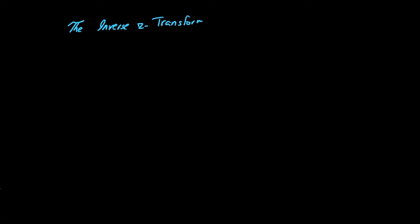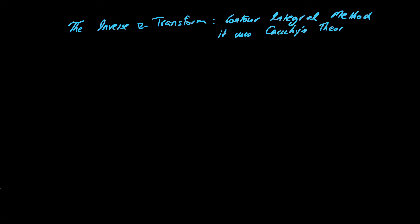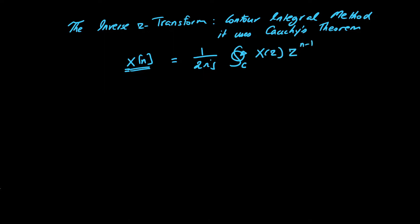We are interested in the inverse Z transform using a direct or general method. Formally speaking, this is a contour integral that uses Cauchy's theorem for complex variable integration. The inverse Z transform — finding x(n) — is equivalent to (1/2πj) times a contour integration in the counterclockwise direction, giving x(n) = (1/2πj) ∮ X(z) z^(n-1) dz.